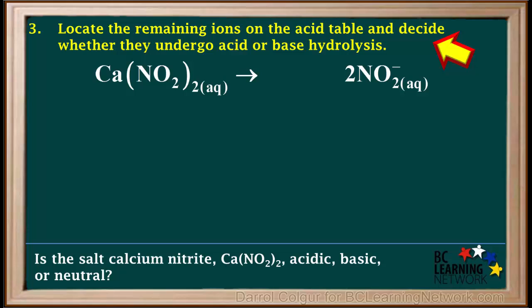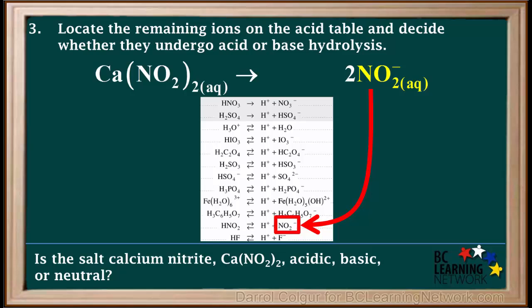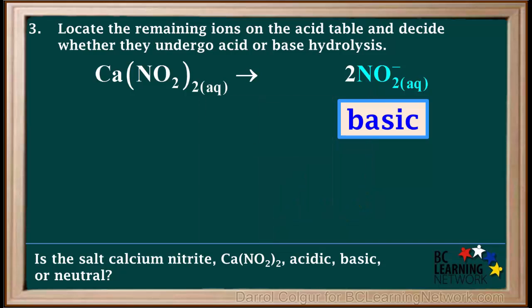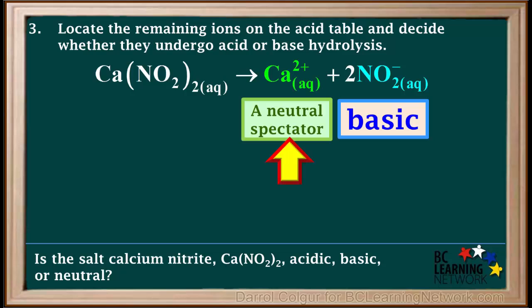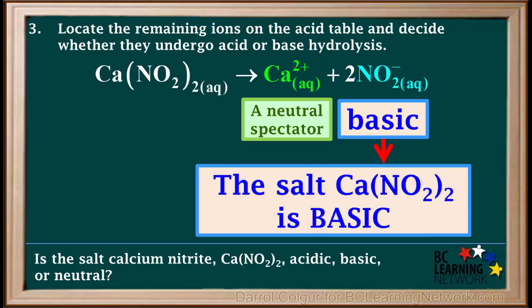Now that we've eliminated the spectator ion, the next step is to locate the remaining ion, nitrite, on the table. The nitrite ion is on the right side of the acid table in the weak base section. It does not start with an H, so it is not amphiprotic — it undergoes only base hydrolysis. Therefore, NO2- is basic. Because Ca2+ is a neutral spectator and NO2- is basic, we can say that the salt Ca(NO2)2, or calcium nitrite, is basic.